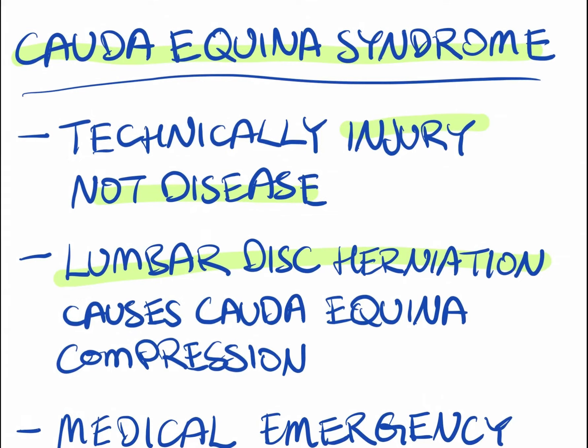As we saw, a lumbar disc herniation causes cauda equina syndrome. I will do a separate video on disc herniations in the future, but for today, just know that a disc herniation is when the gel inside the disc ends up outside of the disc due to either injury or micro-trauma, as discussed in previous videos, and it is now compressing on the cauda equina.